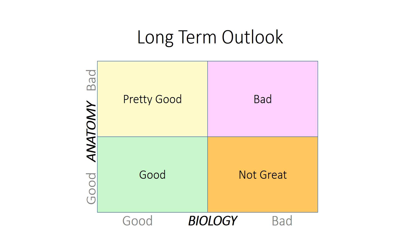The long-term outlook for people with Dupuytren disease really depends a lot on their biology. If someone has a mild contracture and mild biology, they have a pretty good outlook. If they have a more severe contracture but mild biology, they still have a pretty good outcome, because we have great technical tools to treat the deformity. However, if the person has more aggressive biology — even if their contracture isn't that bad — their long-term outlook is not great. And if someone has bad biology and a bad contracture, they stand a very real risk of failing everything we have to throw at them.